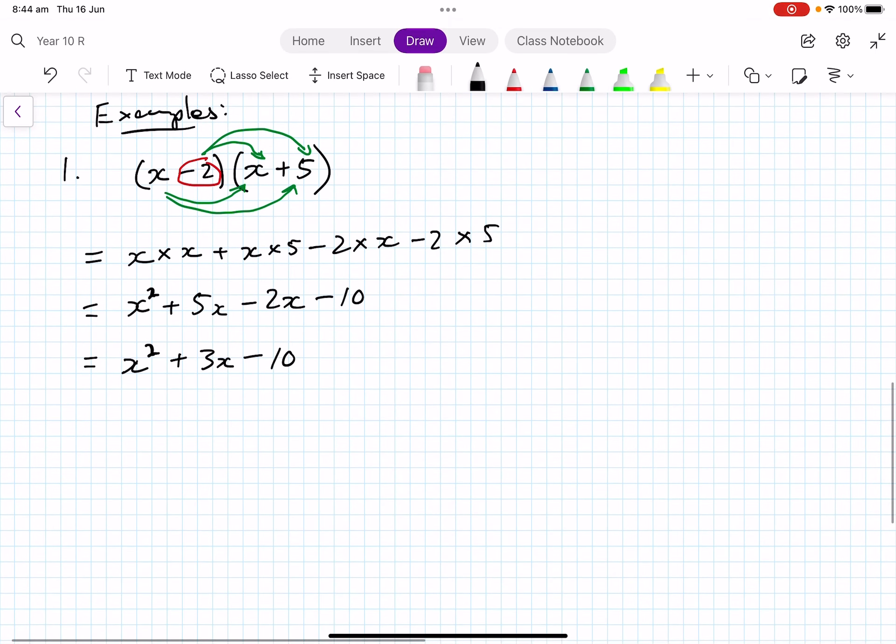Again, we see that a binomial product turns into a quadratic expression. Now we can also vary it up a little bit more. I'm going to do three examples here. If I said, okay, well, what if I had 2x plus 3 bracket 3x minus 1? So we've got something like this. So again, same process, we just go through it.